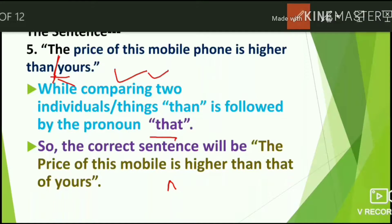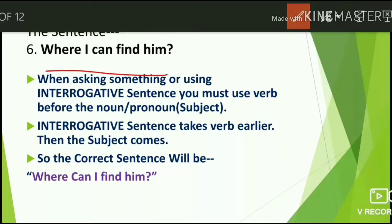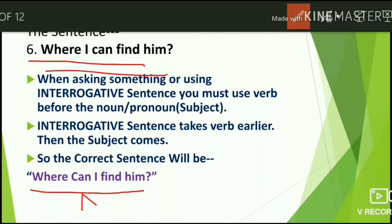Next: 'Where I can find him?' This is incorrect. When asking a question or using an interrogative sentence, the verb must come before the subject. The correct sentence is: 'Where can I find him?' In interrogative sentences, the auxiliary verb comes before the subject.